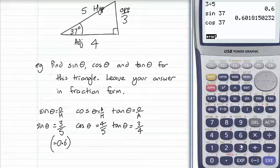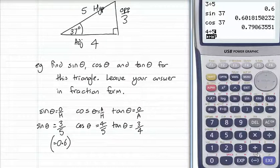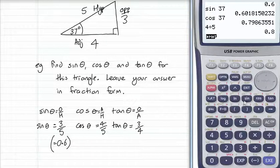What's cos of 37 degrees? Cos 37, 0.8. I'm having to round a bit because the angle's not quite exact. Is 4 over 5 equal to 0.8? Yes it is. 3 quarters is 0.75, tan of 37 degrees.